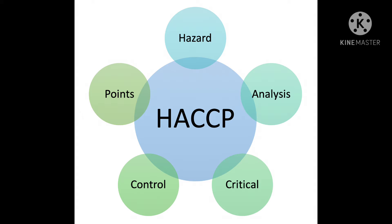HACCP applies to the entire food chain, from production, manufacturing, distribution, and each and every activity. HACCP is important to prevent foodborne illness.